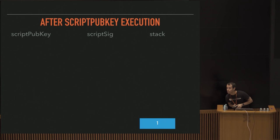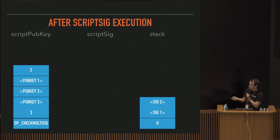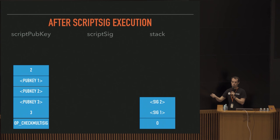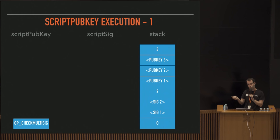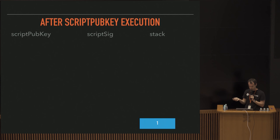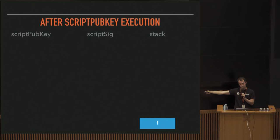This is bare multi-sig, and it's expensive because it uses up a lot of data in the UTXO set, so it costs extra fees. Usually multi-sig will be wrapped into a P2SH. Once OP_CHECKMULTISIG runs, it pushes a 1 onto the stack. With execution complete, we're left with a 1 on the stack - the stack is non-empty, the top element is non-zero, so this evaluates to true.